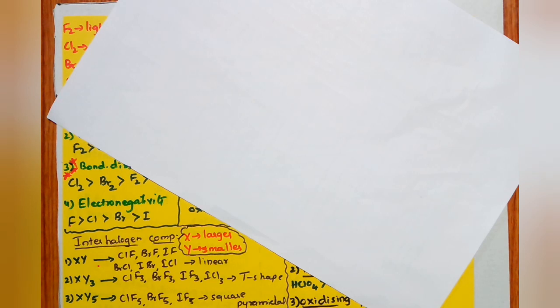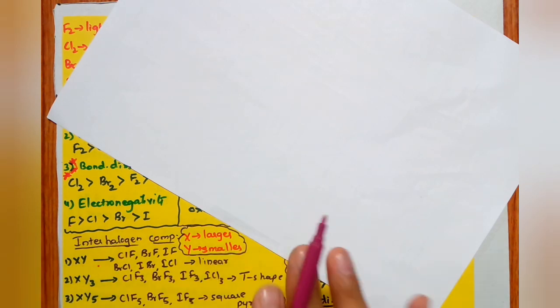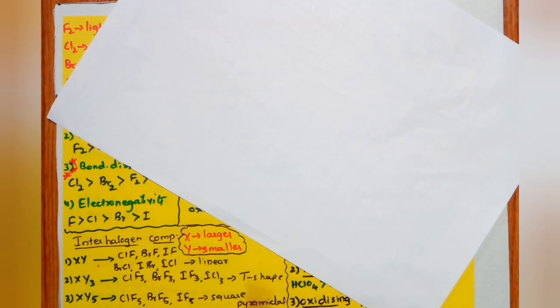Ionic nature decreases down the group as electronegativity decreases. Acidic nature increases down the group. HI is the strongest acid among the hydrogen halides.